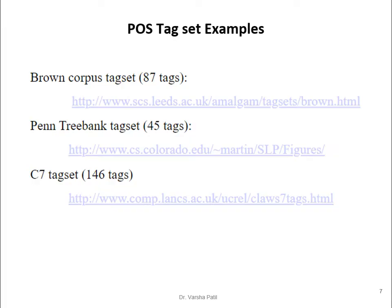In NLP applications, the Penn Treebank tag set is very popular — it includes 45 tags that are easy to use, and with these 45 tags we can generally identify most categories of POS tags. The C7 tag set is much more detailed as it goes for very fine-grained detail.